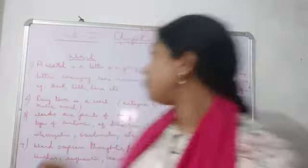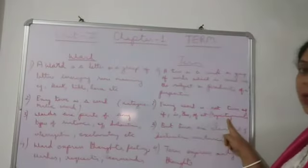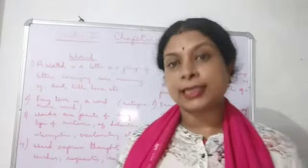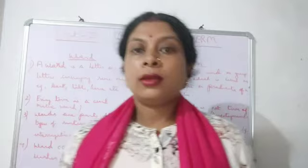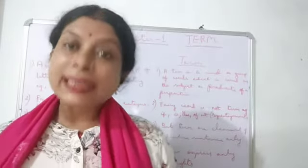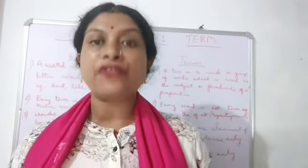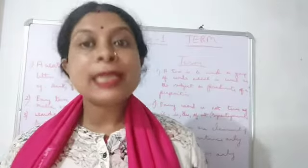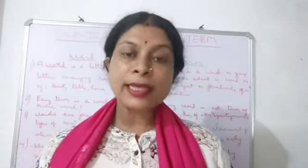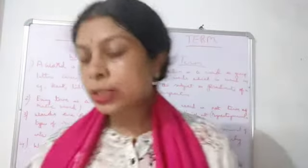Words are of two types: categorematic and syncategorematic. Categorematic words are those which can be used as a term — like table, chair, house, John, wall — because they can be used as the subject or predicate of a proposition. Syncategorematic words cannot be used as terms because they need support — like 'and', 'if', 'is', 'of', 'as' — they only get meaning when joined with a sentence. So every term is a word, but every word is not a term.